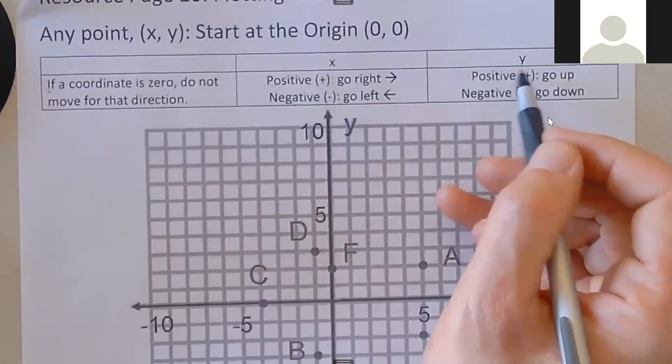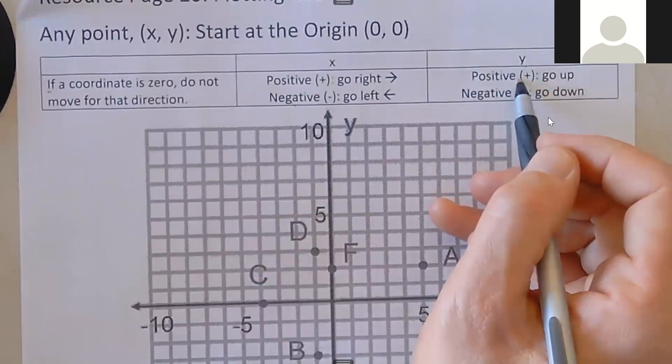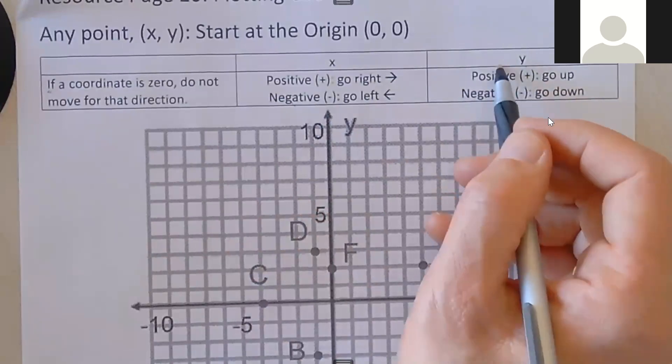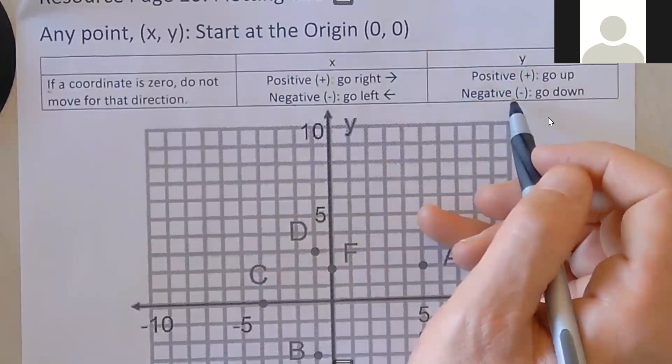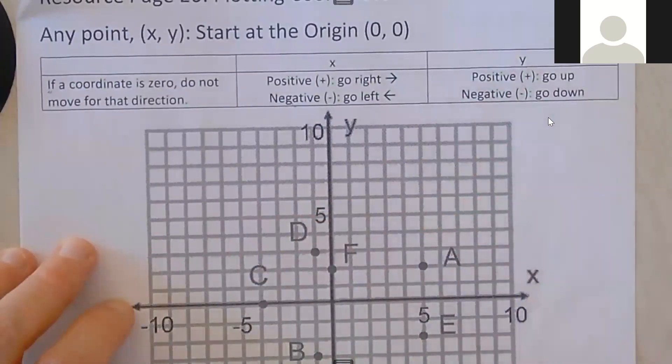And Jalen, could you read about y? For the second number, y, if it's positive go up, and if it's negative go down. Okay, cool. So let's do a few examples.